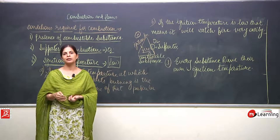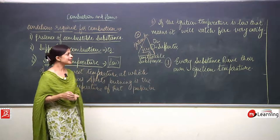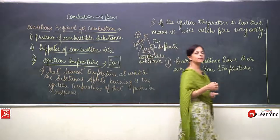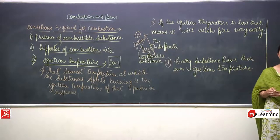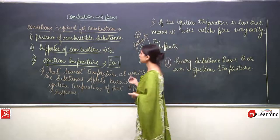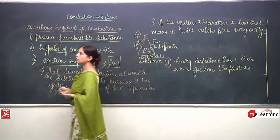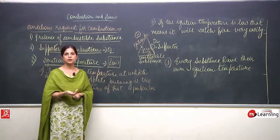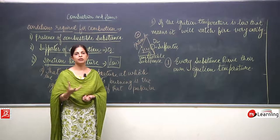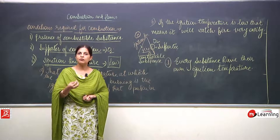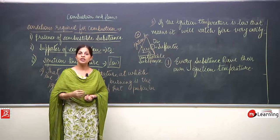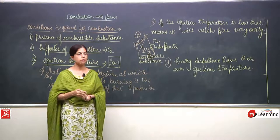To prevent sodium from burning, we cut the supply of moisture and oxygen by keeping it in kerosene. Similarly, phosphorus also has a very low ignition temperature and so it is stored in water. Sodium reacts even with a small amount of moisture in the air, causing it to start reacting and reach its ignition temperature.